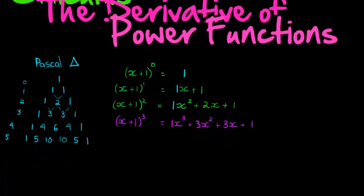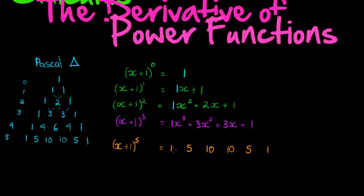Let's do (x+1)^5. The coefficients are 1, 5, 10, 10, 5, 1 — and we add x in decreasing order of exponents: x^5 + 5x^4 + 10x^3 + 10x^2 + 5x + 1. We don't need to write x^0 since it's just 1. There we have it, expanded very briefly.